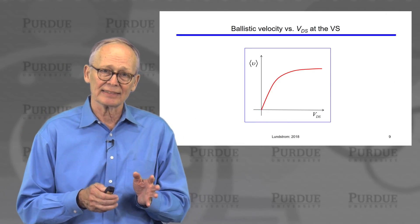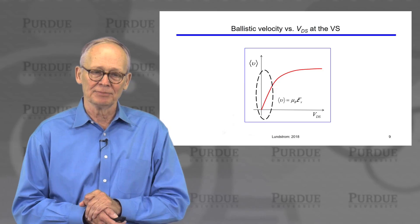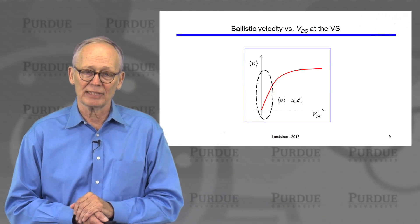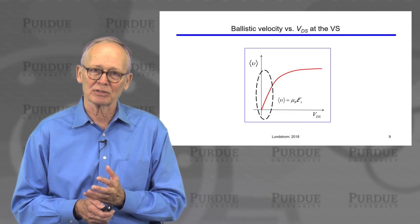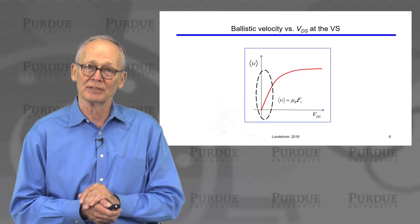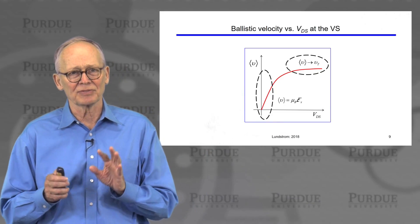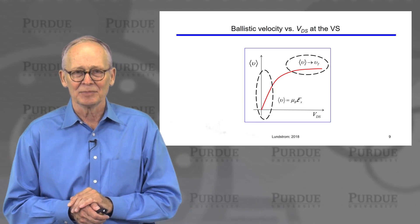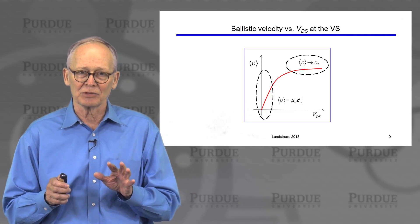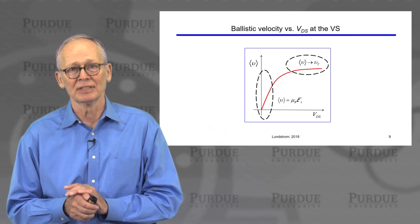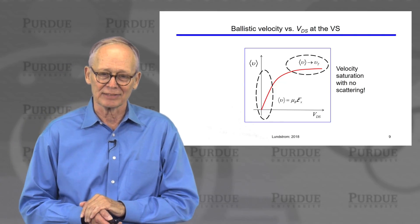We then examined how the velocity at the virtual source varies as a function of drain-to-source voltage. In the linear regime, the average velocity is ballistic mobility times electric field — very similar to what occurs in a bulk semiconductor, but with ballistic mobility rather than scattering-limited mobility. Under high field, the velocity saturates. Initially, this surprised people, because velocity saturation in semiconductors is generally thought to occur due to strong scattering. We see the velocity saturate even when there is no scattering — that's quite an interesting feature.